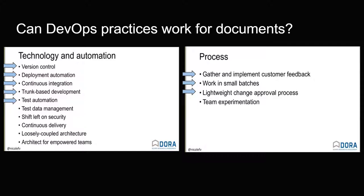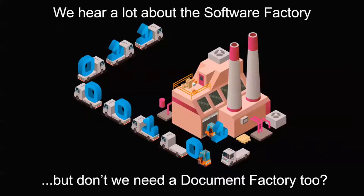We talked about the change approval process — look for ways to lighten the load there, be more outcome-oriented, more experimentation-oriented, more demonstration-oriented, even as it applies to documents. Don't let documentation be the anchor that holds you back from implementing improvements across your program. We hear a lot about the software factory — I would suggest we need a document factory as well. That document factory probably needs to be a critical part of our software factory. If we had the ability to pull objective evidence straight from our software factory into the published documentation that accompanies our product, we're going to get a lot of efficiency in schedule and cost advantages.